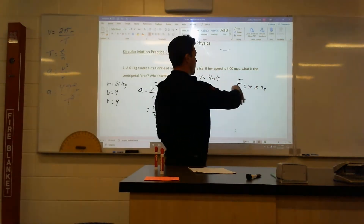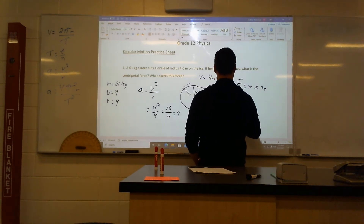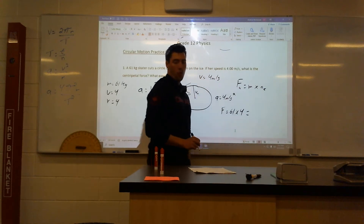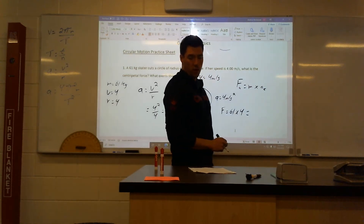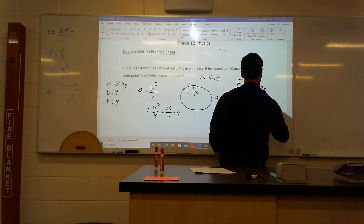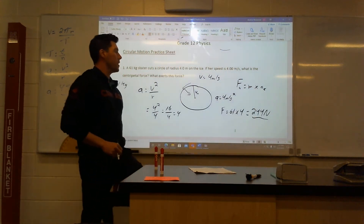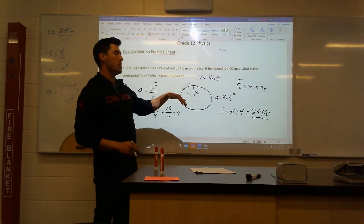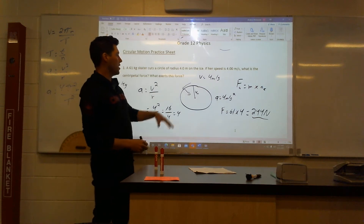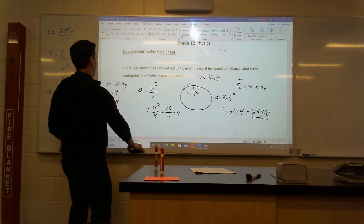Now this part becomes easier. Force equals mass of 61 times four, which gives me a centripetal force of 244 newtons. So that is the amount of force that is consistently being pushed inward to keep this object in circular motion. All right, let's go to question two.